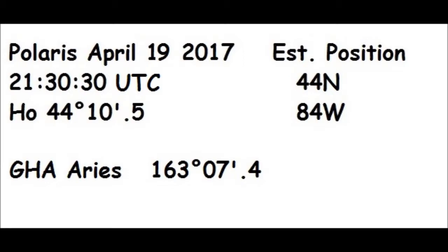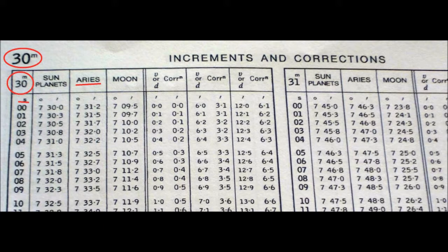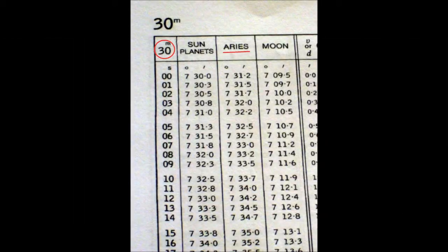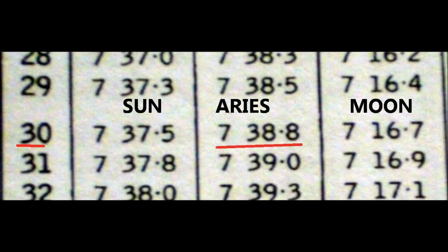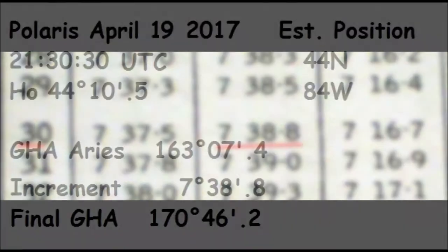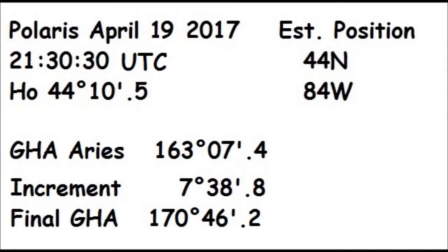You still have 30 minutes and 30 seconds to account for, so move to the increments and corrections pages. Find the page for 30 minutes and move down the left column until you find 30 seconds. Remember to look under the Aries column, and you will find an increment of 7° 38.8 minutes. Add the two together and that gives you a final GHA of 170° 46.2 minutes.